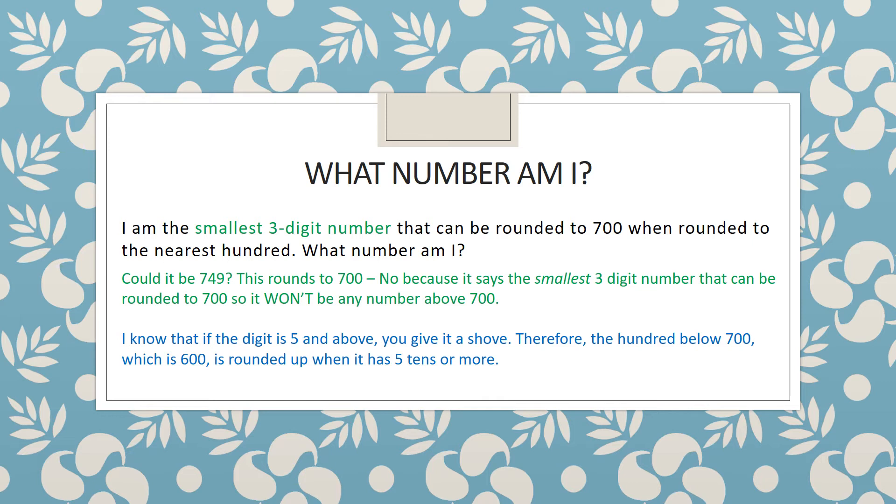However if we look back at the question it says the smallest three-digit number that can be rounded to 700. So could it be 749 or 728? No because it says the smallest three-digit number that can be rounded to 700 so it won't be any number above 700.